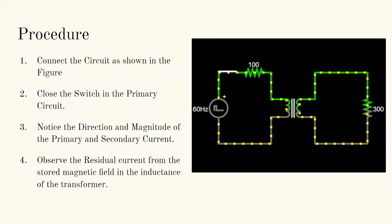This is how the circuit is going to be connected. You have a pulse input from your power source — consider it like an AC input, but to understand polarity we're going to use a DC pulse. It will have an AC component which is the pulse component. You have a switch, a 100-ohm current limiting resistor, your transformer, and a 300-ohm resistor on the secondary. We're going to notice the direction and magnitude of primary and secondary currents and voltages, and the residual current that flows once the switch is open or the pulse is disabled.